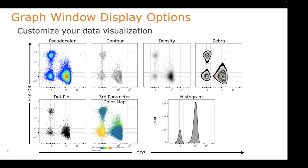Here are some basic dot plots and an example of the third color parameter. We're displaying the PE parameter, mapping its expression values as a heat map — a color gradient on top of the two existing parameters shown on X and Y. And over on the right is just your basic univariate histogram.